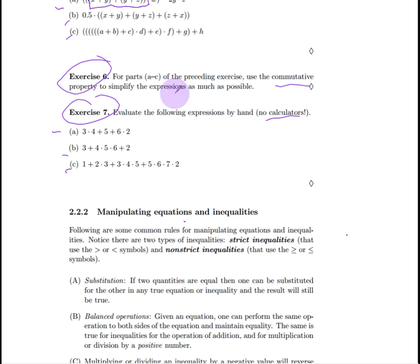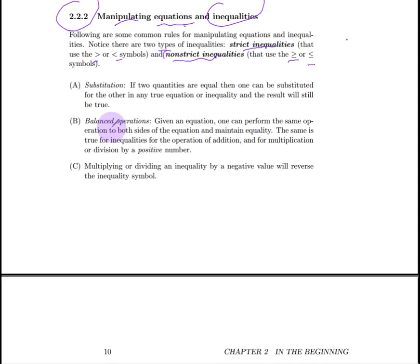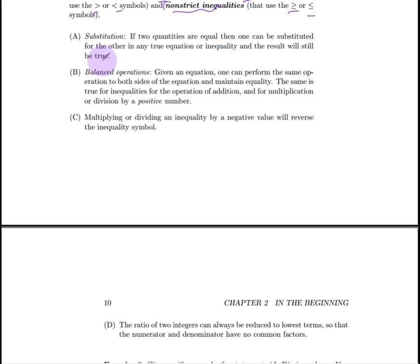Now, we know a big part of algebra is simplifying equations, and in order to simplify equations, we need to have rules. So, in this section, we'll talk about the rules that enable you to transform and manipulate equations and inequalities. Inequalities are also important. Of course, there are two types of inequalities. The strict inequalities that have less than or greater than symbols, and non-strict inequalities, which allow for greater than or equal to and less than or equal to.